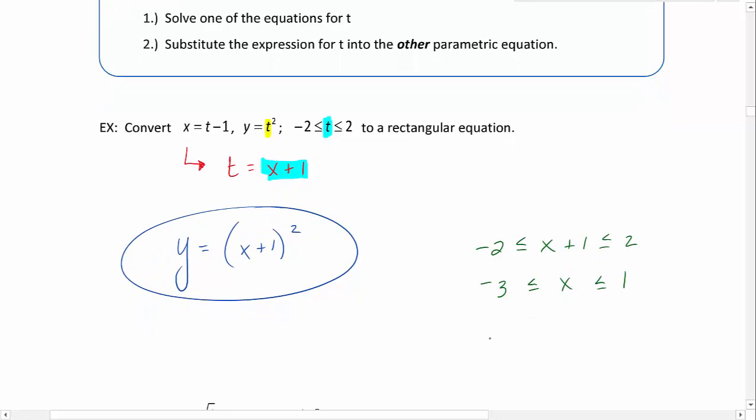This tells us that the domain would be equal to negative 3 to 1. So if you're asked for the domain, that's how you've figured out the domain once we've transformed into rectangular form.